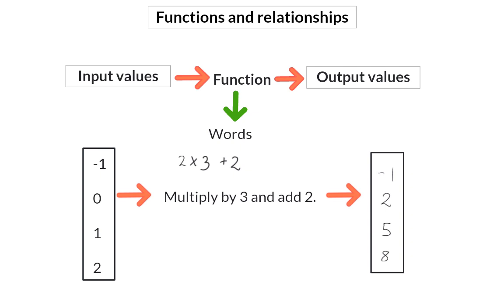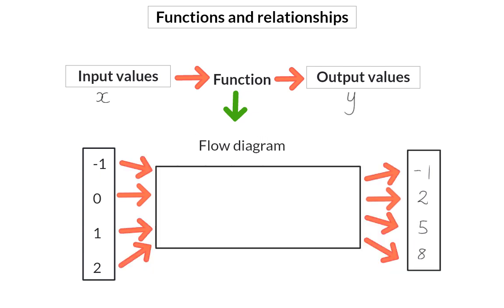Very often we also use symbols — mostly the input value will be x and the output value y. This same function can also be given as a flow diagram. Here we indicate in the diagram that you have to multiply by three and then add two to determine your output values. Or we can make the input values x, and then indicate that x has to be multiplied by three and then two needs to be added to get y, or your output values.